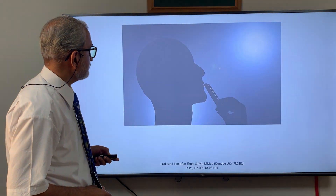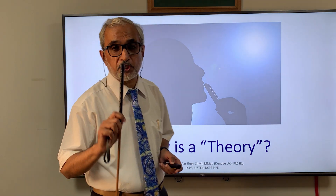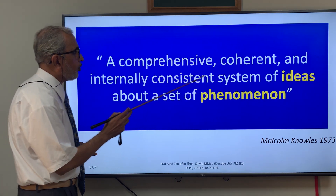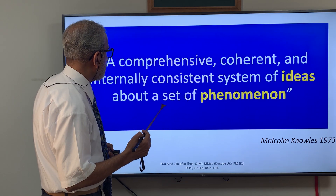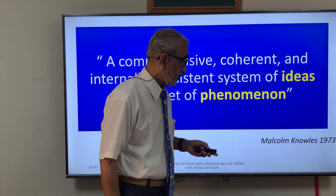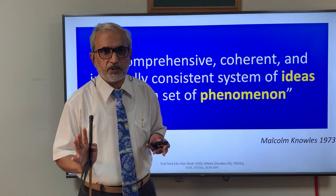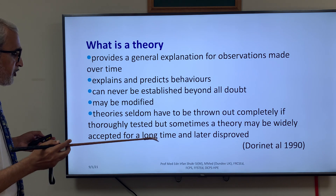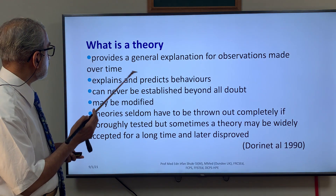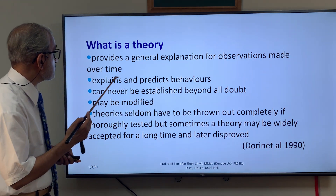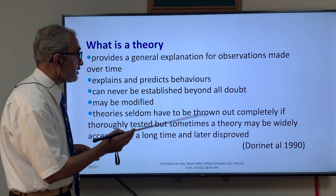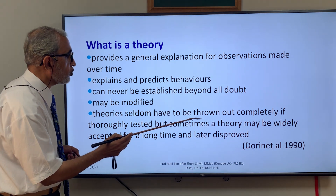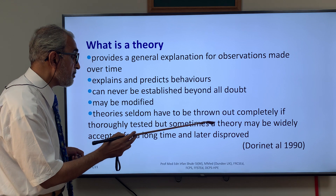Before that, what is the concept of a theory? A theory is a comprehensive, coherent, and internally consistent system of ideas about a set of phenomena. Simply put, a theory is something which provides general explanations for observations made over time, explains and predicts behavior, and can never be established beyond all doubt — it may be modified.